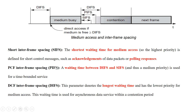Before going into detail on the three mechanisms, let's discuss inter-frame spacing. Inter-frame spacing means there is a gap maintained between frames. In IEEE 802.11 there are three types: SIFS — short inter-frame space, PIFS — PCF inter-frame space, and DIFS — DCF inter-frame spacing. SIFS is the shortest waiting time for accessing the medium, used when waiting for acknowledgements and polling responses.